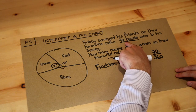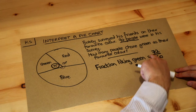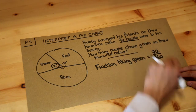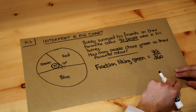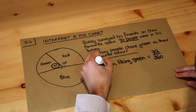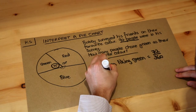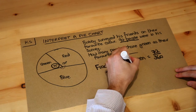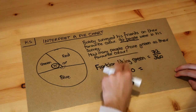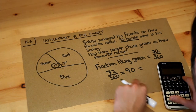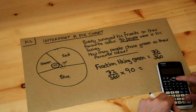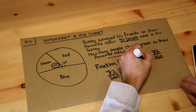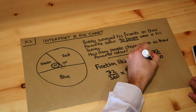We know there are 90 people, so if we know the fraction that like green is 72 over 360, we have to calculate that fraction of the total 90 people. So we just need to do 72 over 360 and multiply that by 90. Doing that on the calculator, we get 18 people like green.